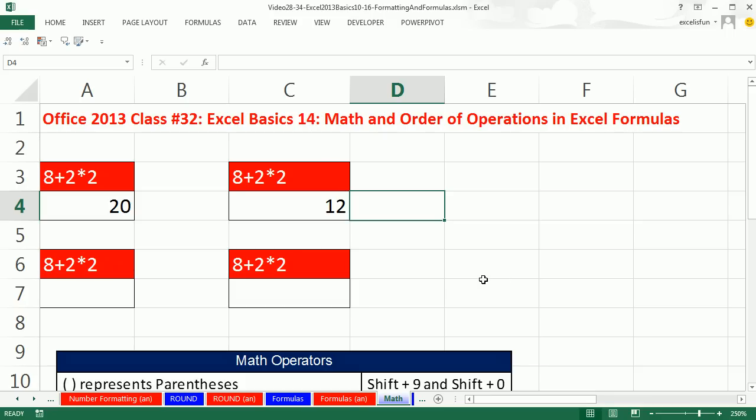We've already talked a lot about this, but let's take a vote here. You raise your hand. What is 8 plus 2 times 2? Is it 20, or is it 12?